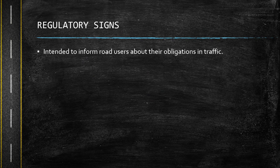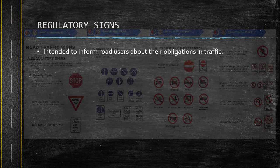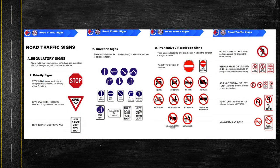Next is regulatory signs. These are intended to inform road users about their obligations in traffic — reminding them of their obligations in following traffic rules and regulations to promote traffic safety and to avoid traffic incidents or accidents. Regulatory signs can be divided into three: priority signs, direction signs, and restriction signs.